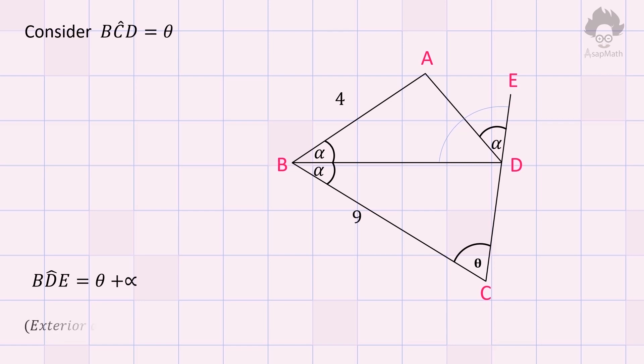Now we know that angle BDE is equal to theta plus alpha. From the figure, it is clear that angle BDE can be written as summation of angles BDC and ADE.